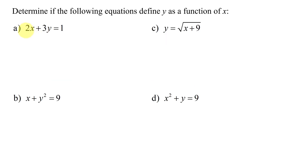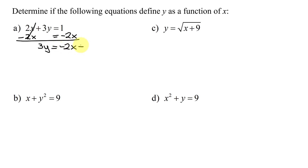Looking at my first equation, 2x + 3y = 1. Solving it for y, I'm going to subtract 2x from both sides, and I get 3y = -2x + 1. Unlike terms can't combine. And now, to get y by itself, I'm going to divide each term by 3. These 3s reduce, and I get y = -⅔x + ⅓.